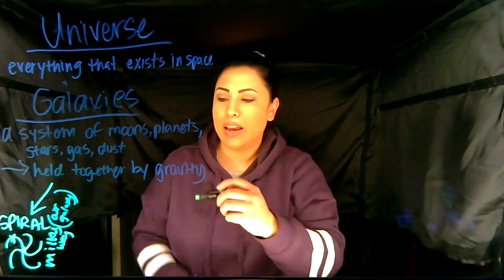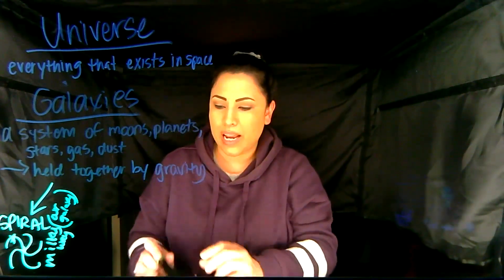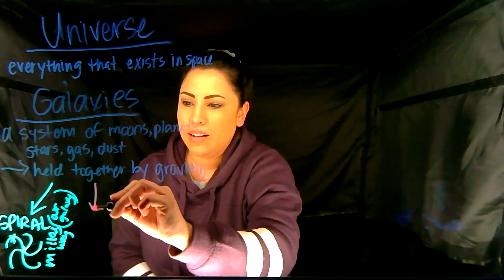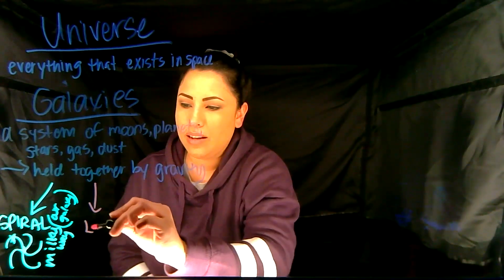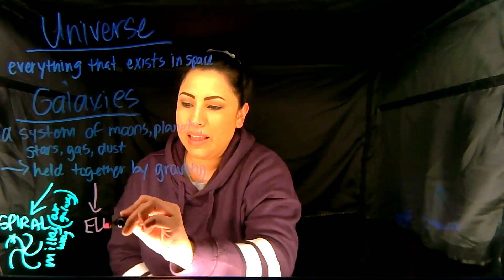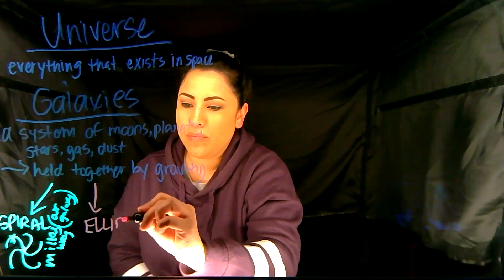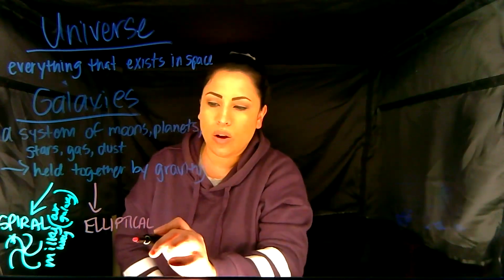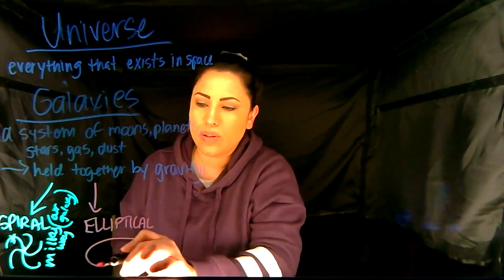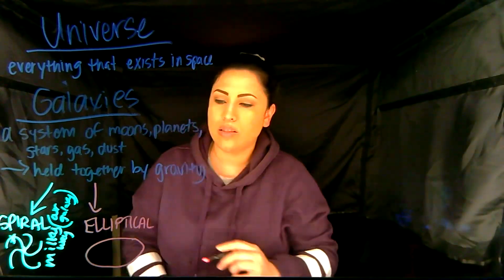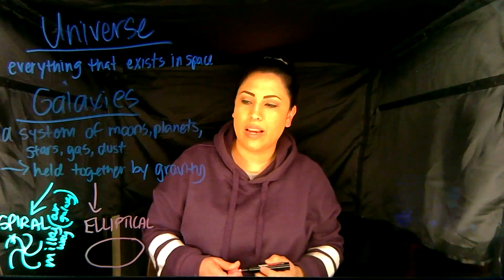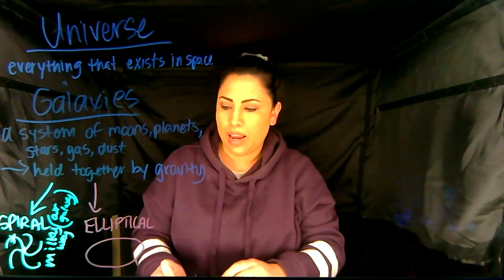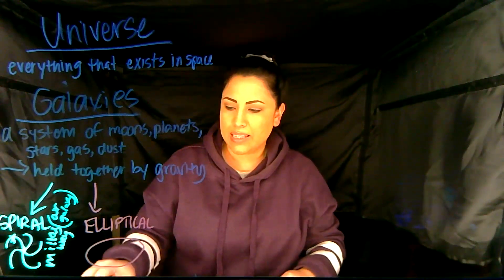Our next type of galaxy is elliptical. Elliptical is kind of how it sounds — it's just like an oval shape.